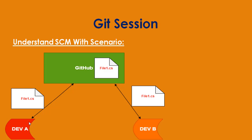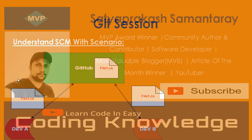Dev B then pushes the modified File1.cs back to GitHub. Dev A can then pull the file from GitHub, see the changes made by Dev B, make additional changes as per requirements, and push the same file back to GitHub. In this way, multiple developers can work on a single project or single file using GitHub.